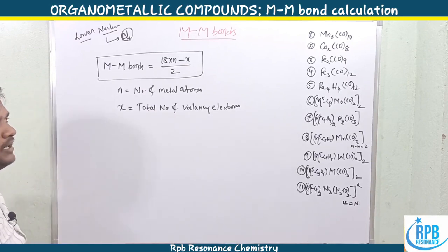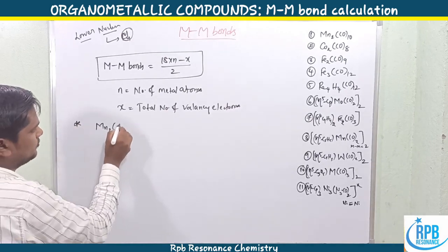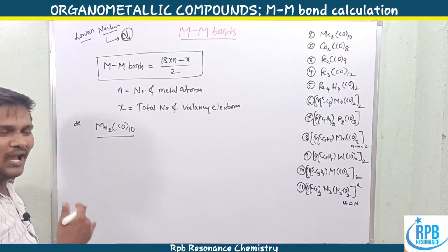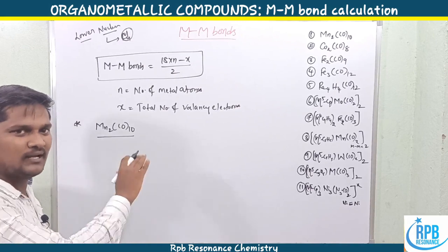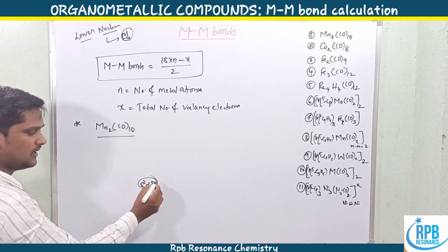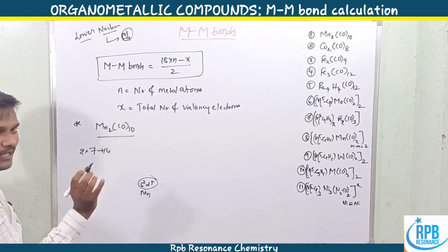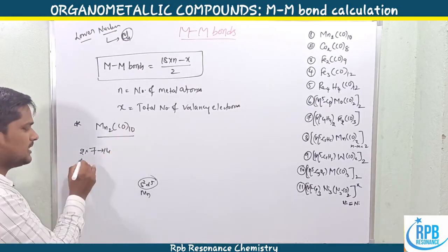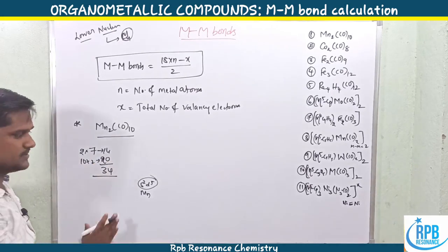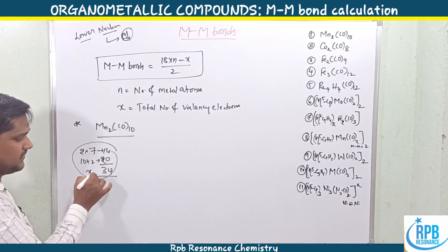Let's solve the first example for more clarity: Mn₂(CO)₁₀. Before applying the formula, we calculate the total number of valency electrons. Mn has the configuration s²d⁵, so 7 valency electrons per metal. Two Mn atoms give 14 electrons. Ten carbonyls give 20 electrons (10 × 2). The total valency electrons x = 34.